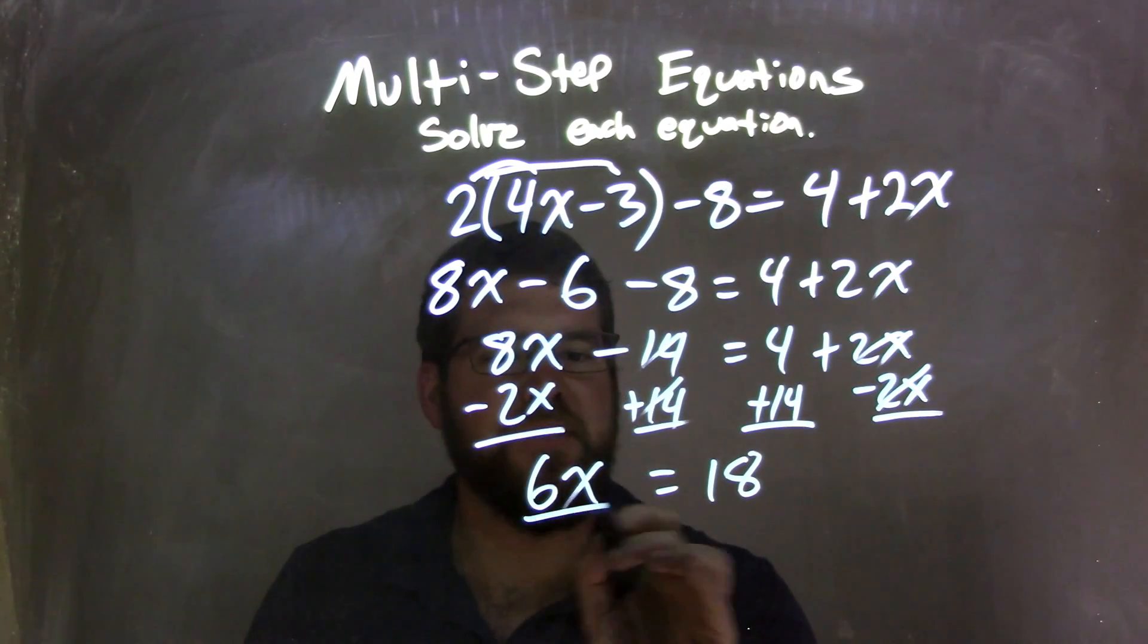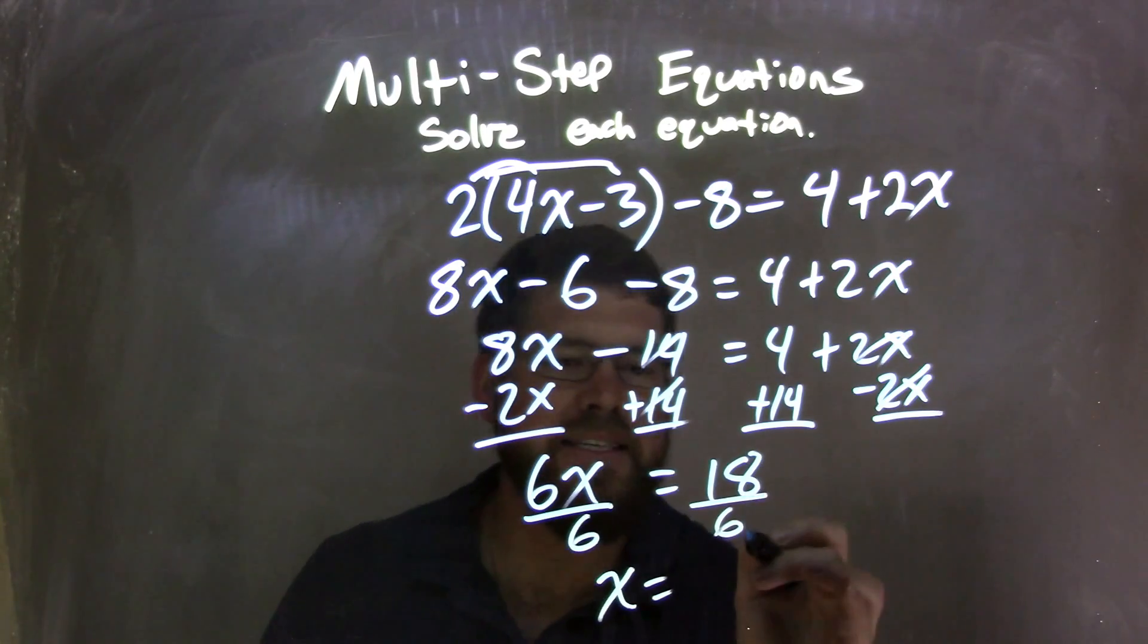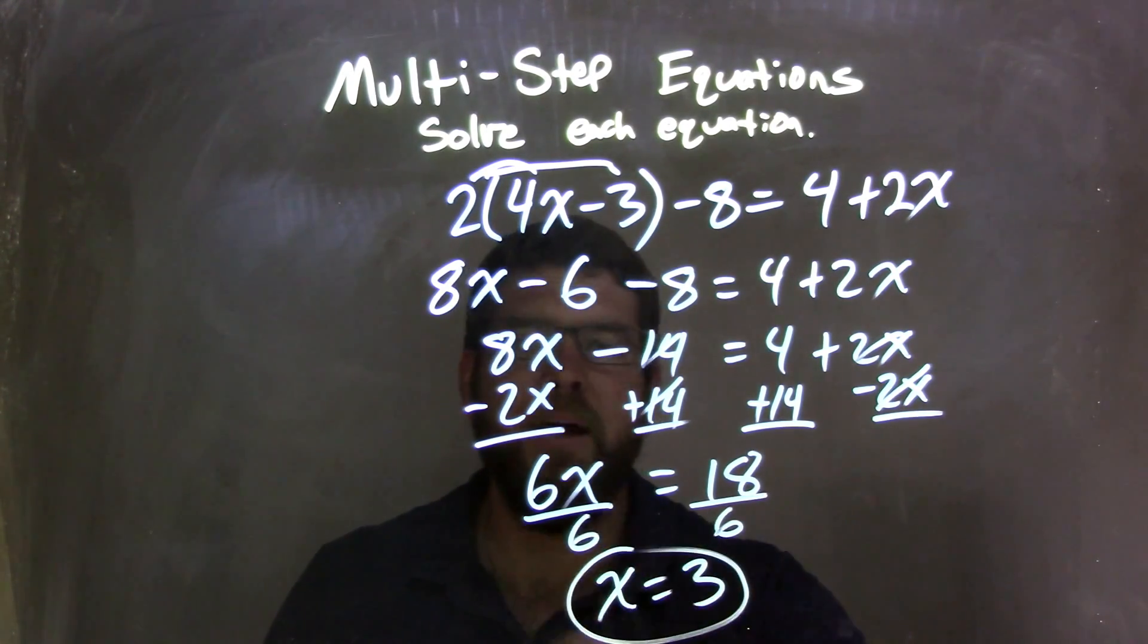Well, opposite multiplication is division, divide by 6 to both sides, leaving me with just x equals 18 divided by 6, which is 3, and that is my final answer.